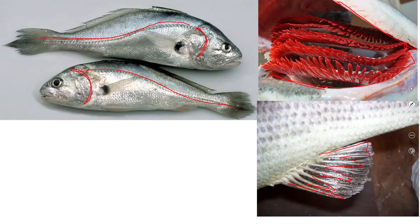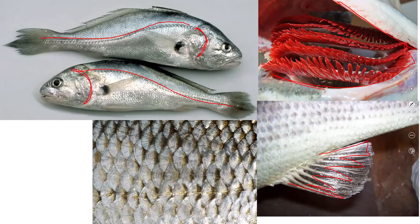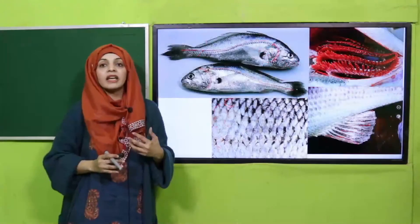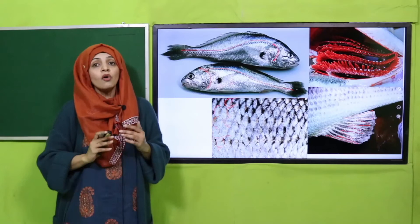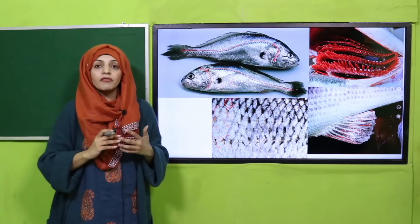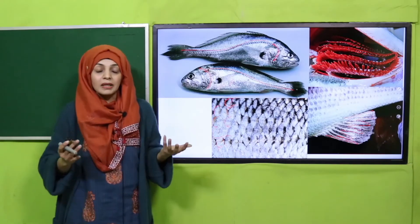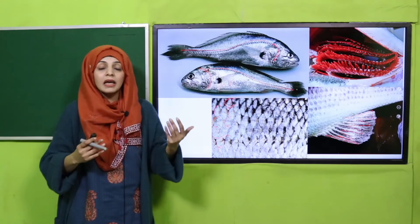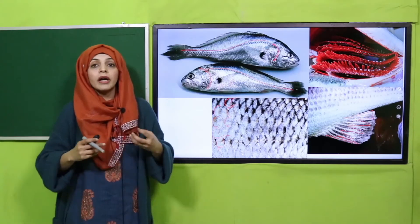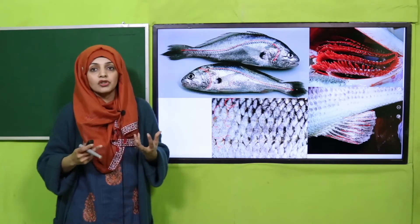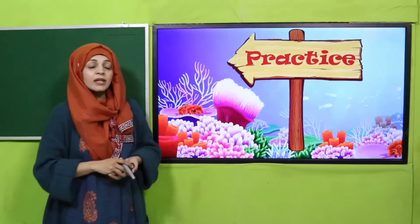There is one more adaptation that is not discussed in your book but I will show it to you — those are the scales of the fish. Yeh machli ke upar jo hote hain, these are the scales. Their adaptation is that the scales of the fish protect it from its enemies — yeh usko enemies se protect karte hain and give it a strong body structure.